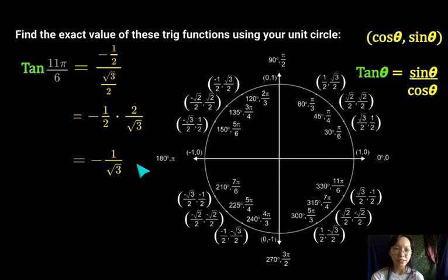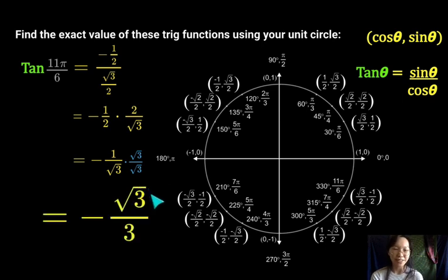Hopefully your math teacher taught you that this is unfortunately a bad answer. We never want square roots on the bottom in the denominator. So hopefully you were taught to multiply the top and bottom by square root 3. And then you'll get a more simplified answer of negative square root 3 over 3. And that's it.